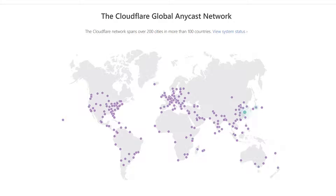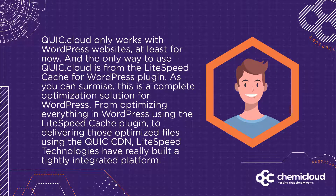Keep in mind that Cloudflare doesn't offer dynamic content caching for free. For that, you have to step up to their APO, or Automatic Platform Optimization Plan, which carries a nominal monthly fee. QuickCloud works only with WordPress websites, at least for now, and the only way to use QuickCloud is from the Lightspeed Cache for WordPress plugin. This is a complete optimization solution for WordPress — from optimizing everything using the Lightspeed Cache plugin to delivering those optimized files using the QuickCloud CDN.